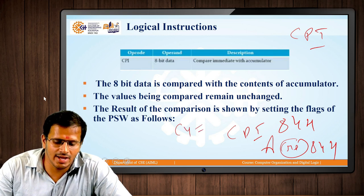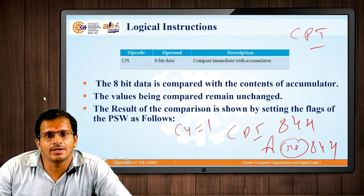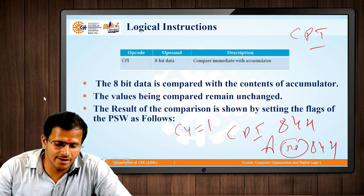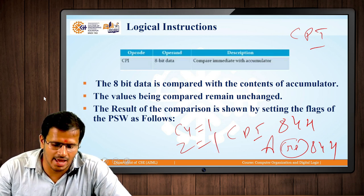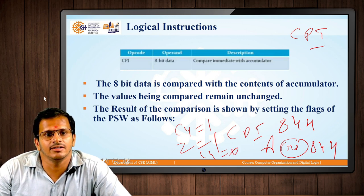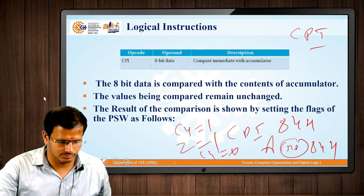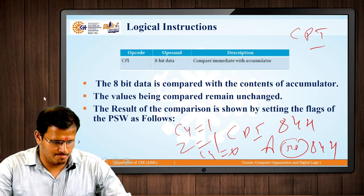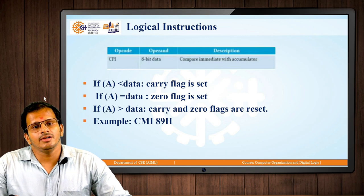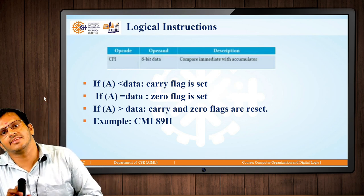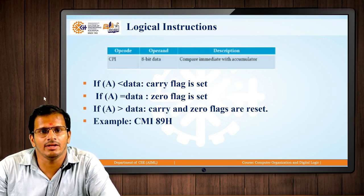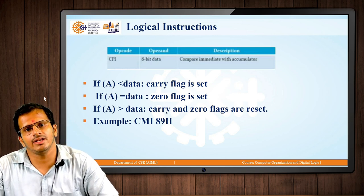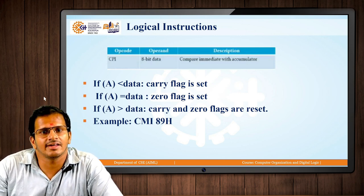For CPI: if the value of CY is 1, the accumulator value is greater than the register value. If Z is 1, the accumulator and the immediate value content are the same. When CY is 0, the accumulator content is lesser than the immediate value. Similarly, when the accumulator content is lesser, CY is set to 1; when equal, Z equals 1; and when the accumulator value is greater than the data value, both carry and zero flags are reset.